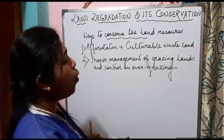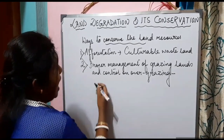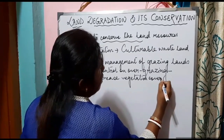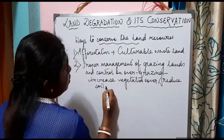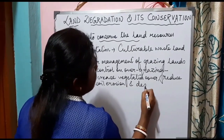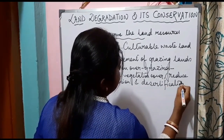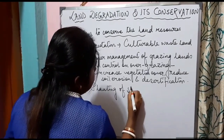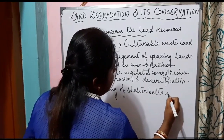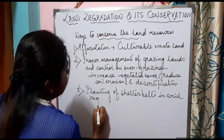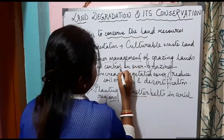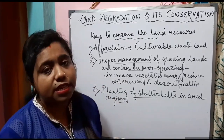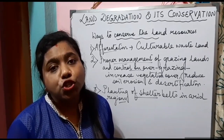We need to control over grazing and properly manage grazing land so that it can increase vegetation cover, reduce soil erosion, and reduce desertification. The third way to conserve our land resources is planting of shelter belts in arid regions like Rajasthan, to check soil erosion. Planting shelter belts especially in arid regions will reduce erosion of the soil by wind.